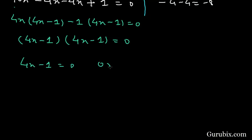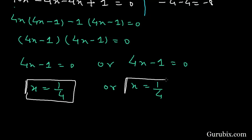This means 4x - 1 = 0 or 4x - 1 = 0. This means x = 1/4 or x = 1/4. So these are the two roots of the given quadratic equation. Thank you.